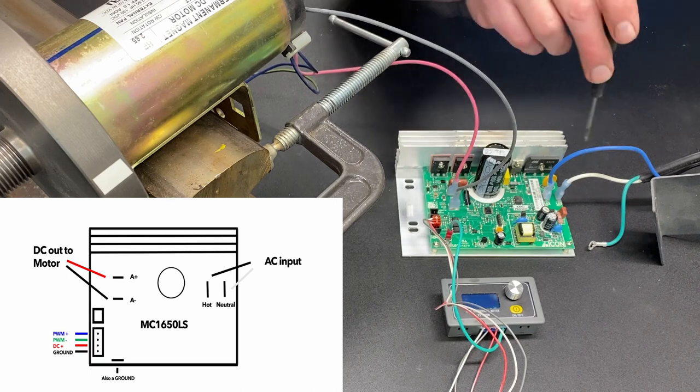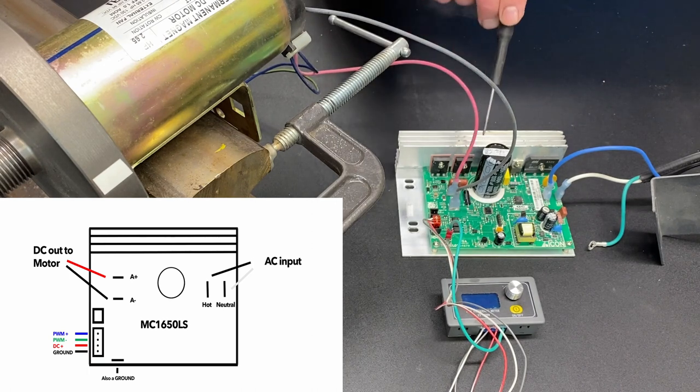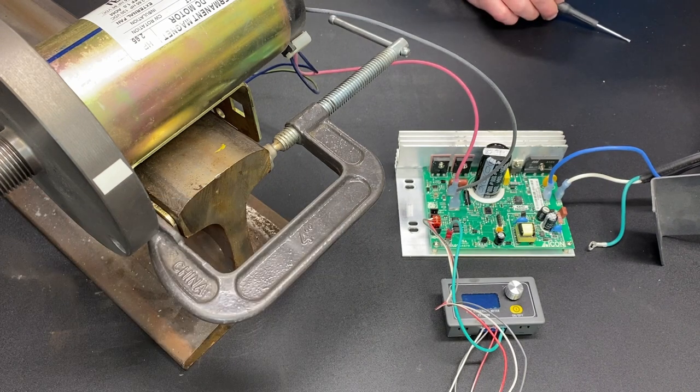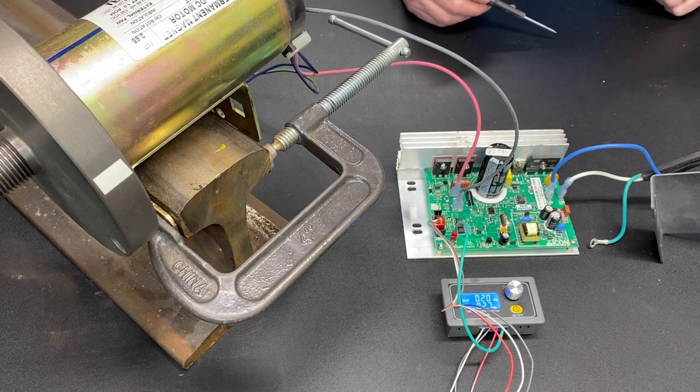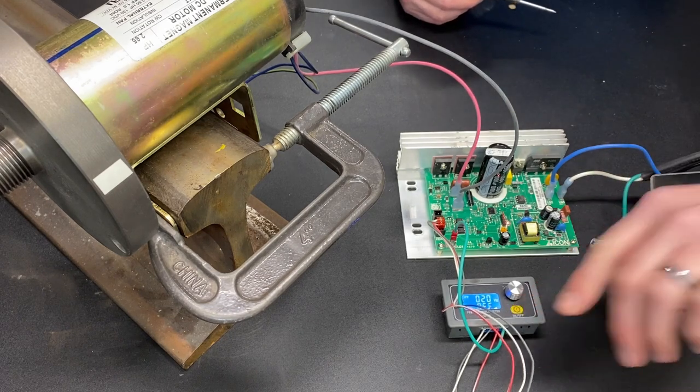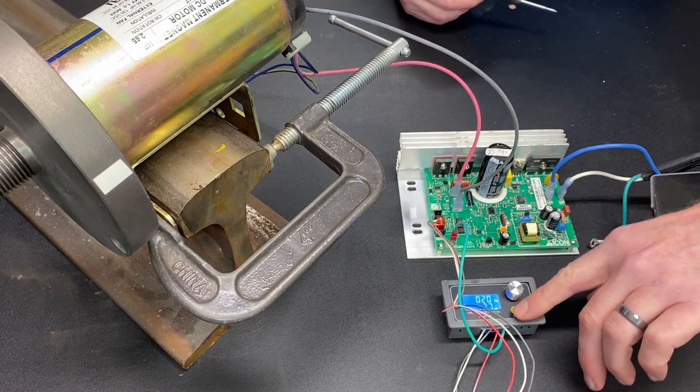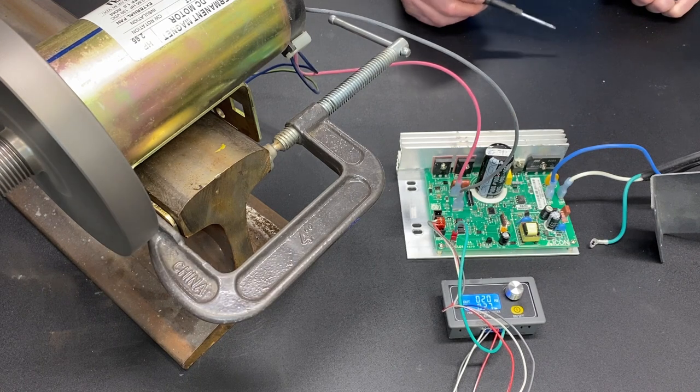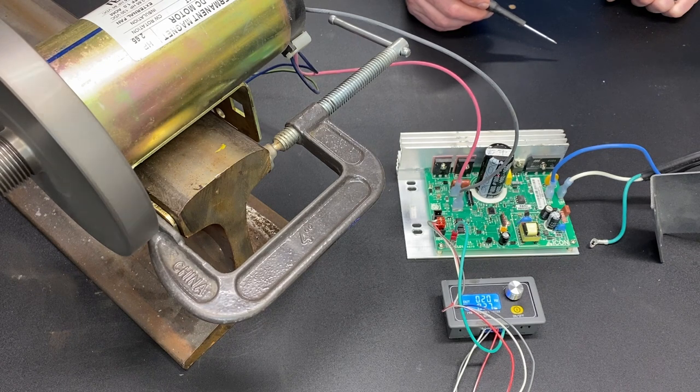So everything's wired up. I've got the AC current coming in on this side. And then I've got the DC current going out to the motor. When we power it on, nothing happens. But just like with the 2100, if we turn the signal generator off and then turn it back on, it will begin to spin up to speed and work as it's supposed to.